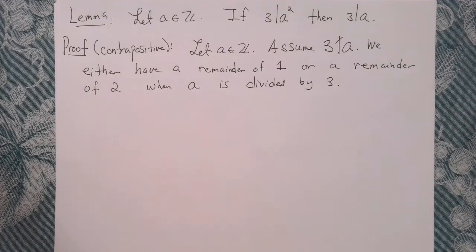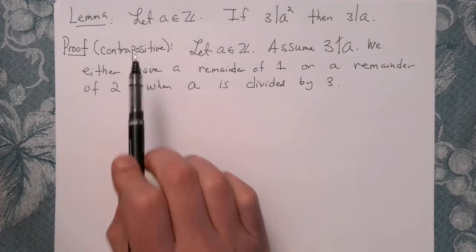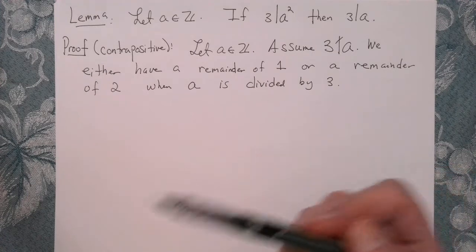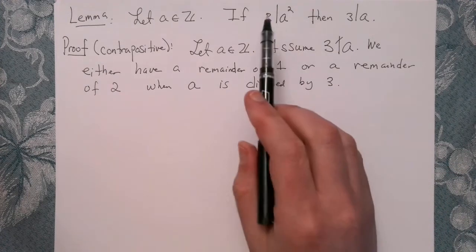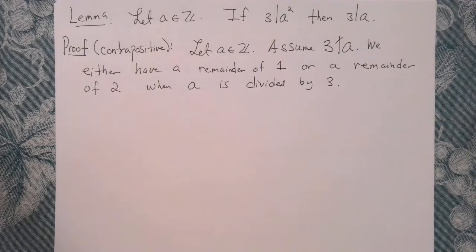This means we've got 2 cases to check. And remember our end goal. Since we're doing a proof by contrapositive, our end goal, when we check both cases, is to show that 3 doesn't divide A squared. So keep that goal in mind.